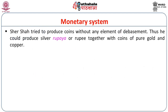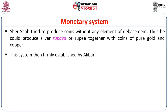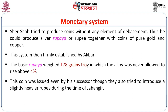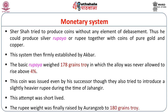Sher Shah tried to produce coins without any element of debasement, producing silver rupaya together with coins of pure gold and copper, but this system operated only for about three years. This system was then firmly established by Akbar. The basic rupaya weighed 178 grain troys, in which the alloy was never allowed to rise above 4%. This coin was issued even by successors, though they tried to introduce a slightly heavier rupee during Jahangir's time. That attempt was short-lived. The rupee weight was finally raised by Aurangzeb to 180 grain troys.